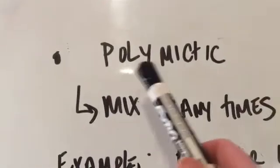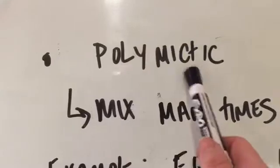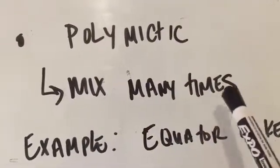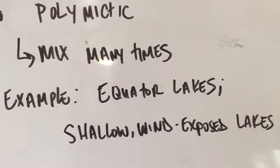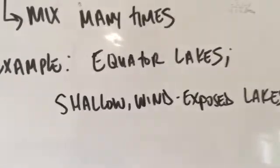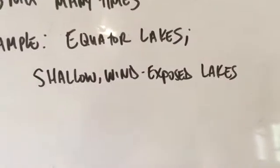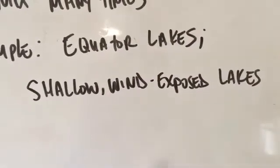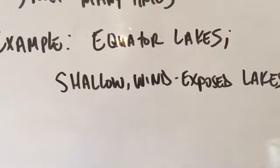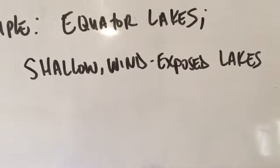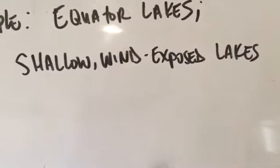Another type is polymictic — poly meaning many — so many mixing events throughout the course of a year. Lakes on the equator are a great example; sometimes they stratify during the day and mix overnight. Another example is shallow, wind-exposed lakes — we have some here in Wisconsin. Think Statehouse Lake right here at the Discovery Center — about 17 feet deep at max, super shallow and oriented north-south so it's wind-exposed. That lake does stratify and has those layers, but on super windy days those layers can erode and mix, and then if it's warm and not windy the next day, stratification can set up again.